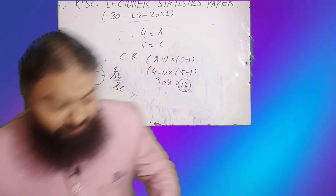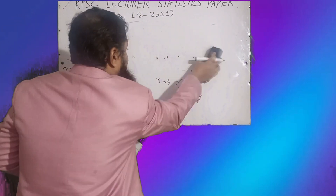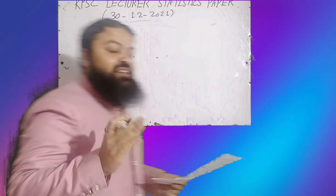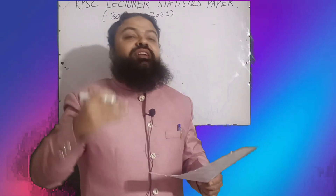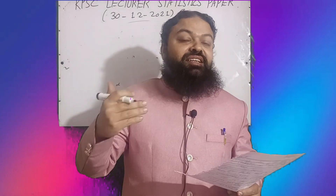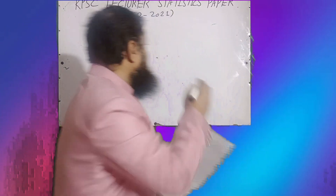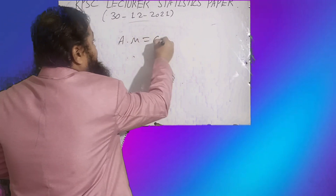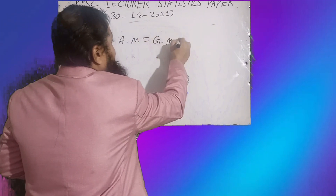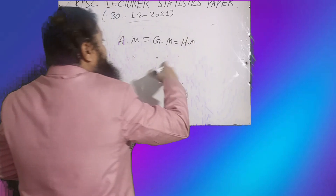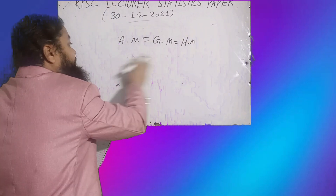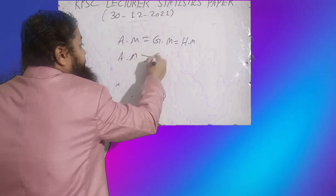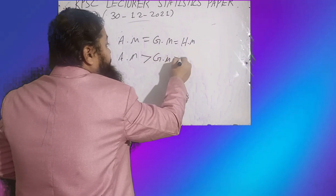The next question: what is the relation between arithmetic mean, geometric mean, and harmonic mean? When all values in the data set are the same, arithmetic mean equals geometric mean equals harmonic mean. When we have different positive numbers, arithmetic mean is always greater than geometric mean, which is always greater than harmonic mean.